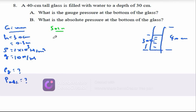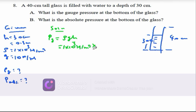The solution: gauge pressure is equal to ρgh. Gauge pressure, as you know, is the difference between atmospheric pressure and absolute pressure. It is given by: density of water = 1×10³ kg/m³, times g = 10 N/kg, times h = 0.3 m. This gives you 3×10³ pascals.